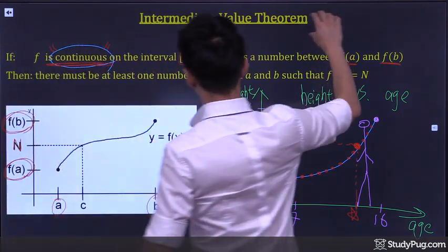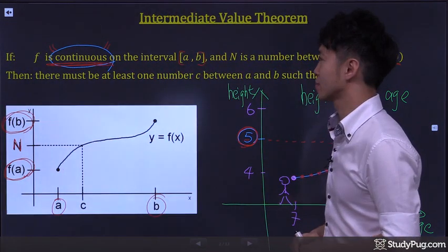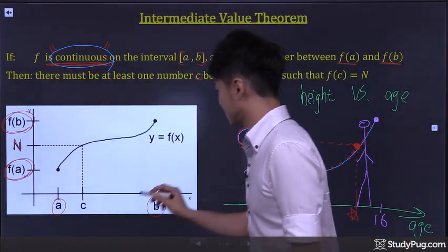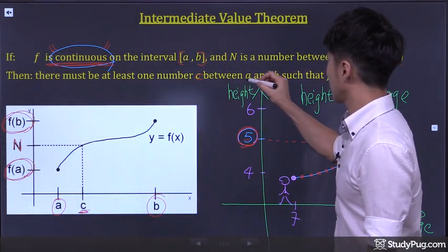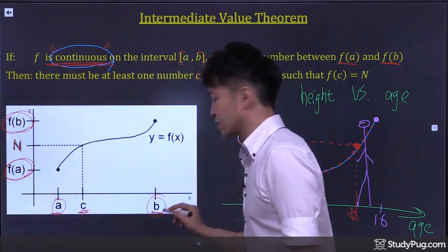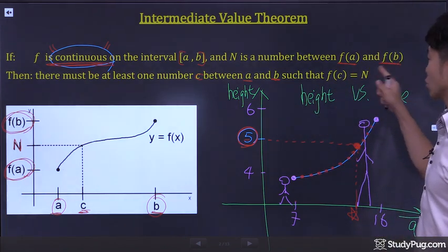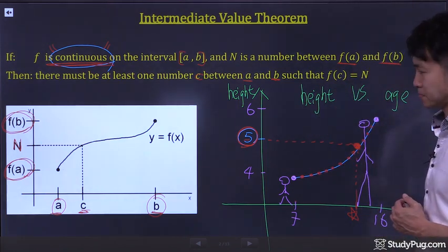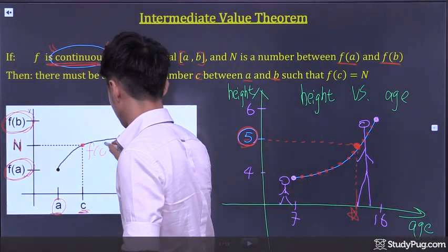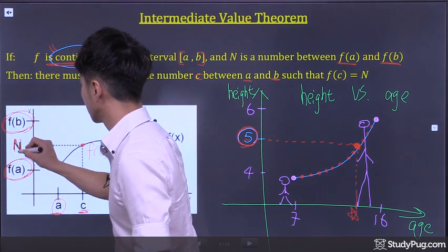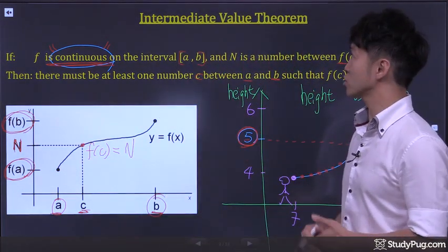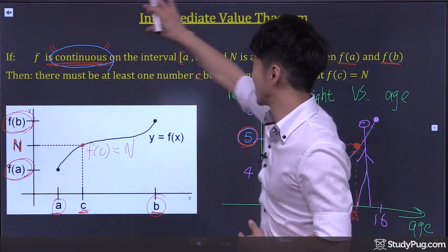Now, according to the intermediate value theorem, there must be at least one number c between a and b such that f of c is equal to n. So the value at point c is f of c, and that must be equal to n. And that is the official definition for the intermediate value theorem.